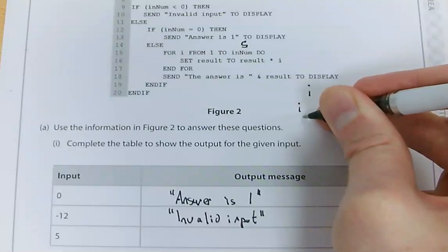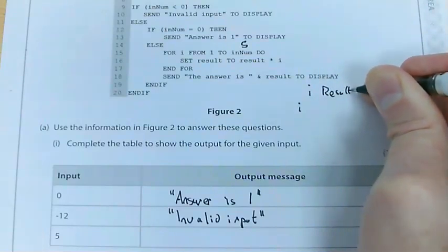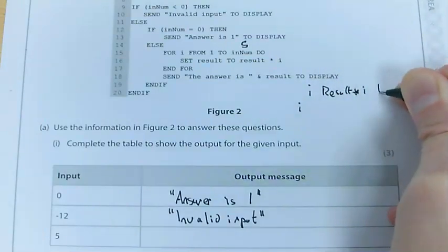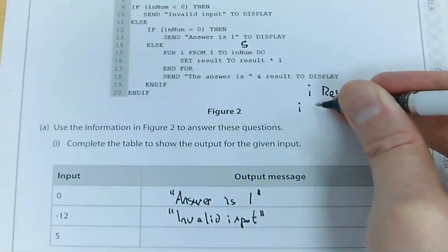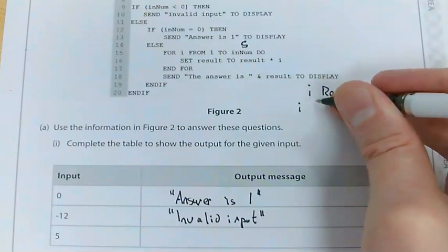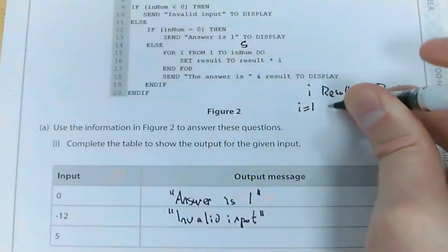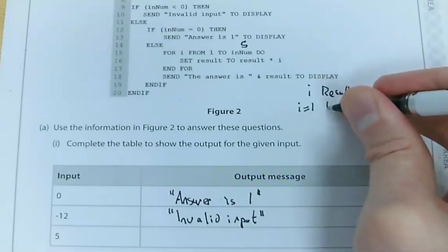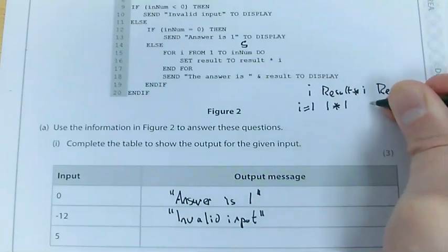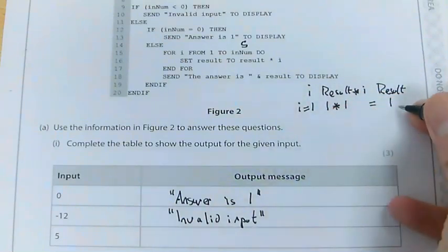So what is going to be i each time. What is going to be result times i. And then what is going to be result from that. It's almost like doing a mini trace table here. Now, I wouldn't recommend you do this in your exam. If you want to do this, I would use scrap paper. So start off with i from 1. So i equals 1 at the start. Set result to result times i. So result at the moment is 1, because we set it to 1 at the start. 1 times 1 equals 1. Because i is 1, result is 1. 1 times 1 equals 1. So my result is 1.